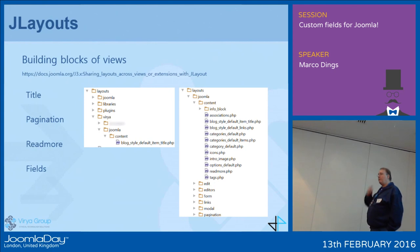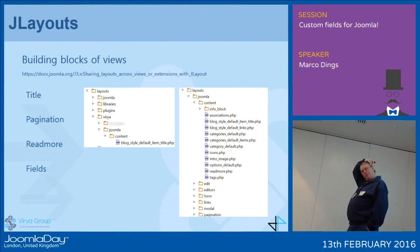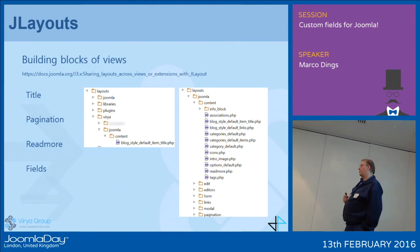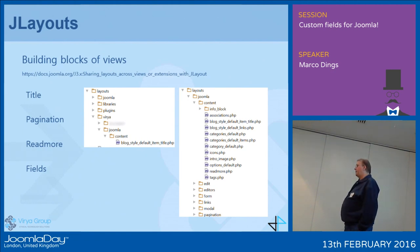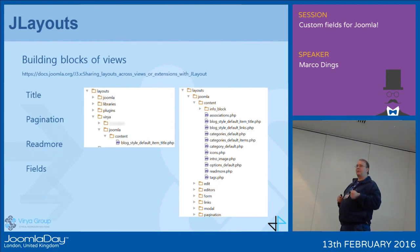The next level of granularity that we have in Joomla is JLayouts. JLayouts were introduced some time ago to make sure that, for example, the way pagination shows on the page, or the way the title is displayed — that used to be all over the place with the same code everywhere. JLayouts is the next level of abstraction: in your template, you can just say 'key layout, blah blah, title of an' — so you have one place where all the titles of your site are rendered.